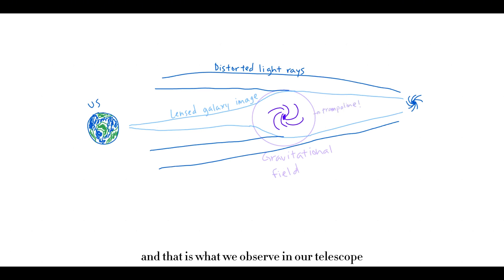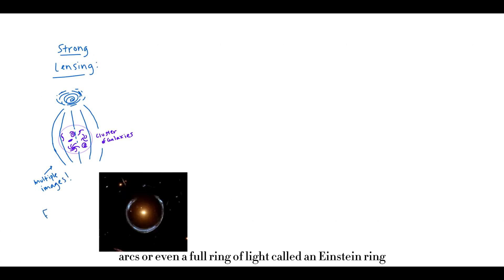There are three main types of gravitational lensing, depending on how strong the effect is. The first panel here shows strong lensing. This is the most dramatic type. When the lensing object is extremely massive, like a galaxy cluster, it can create multiple images of the same background object, arcs, or even a full ring of light called an Einstein ring, which we'll get into soon.